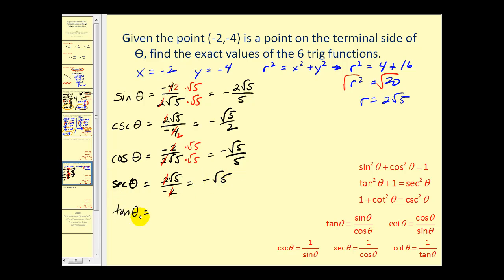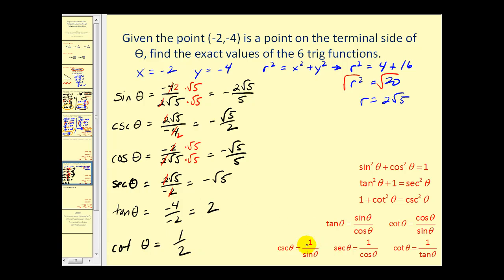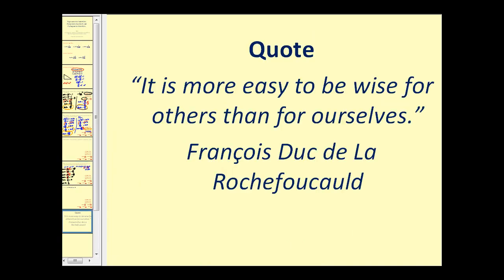Tangent theta equals y over x, so negative four over negative two equals two. And cotangent theta is the reciprocal of tangent theta, so the reciprocal of two is one-half. Here we used several of the reciprocal identities to help us find these function values. I hope you found this video helpful. Thank you and have a good day.